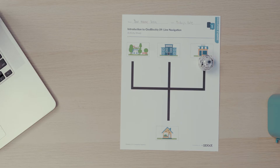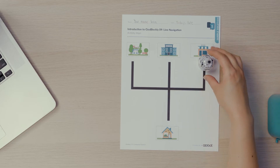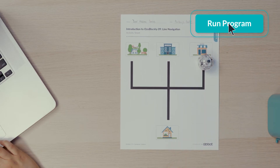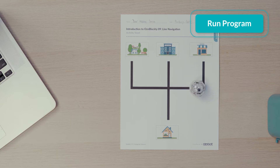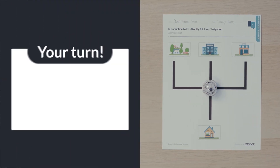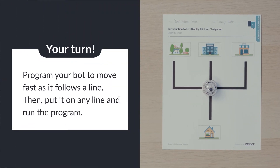Let's watch my bot in action. I will place my bot at the store. Now I will click run program. My bot follows the line fast to the intersection and stops. Now it's your turn to add code to your program. Can you program your bot to move fast as it follows a line? Then put it on any line and run the program.